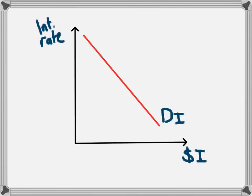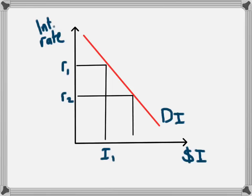The second diagram we're going to look at is the demand for investment. The demand for investment is a downward sloping curve because as the interest rate falls, people will demand more money — in this case, businesses borrowing more by taking out loans. So if the interest rate is R1, the level of investment will be I1. If interest falls from R1 to R2, investment increases from I1 to I2. This is why the demand for investment is a downward sloping curve.